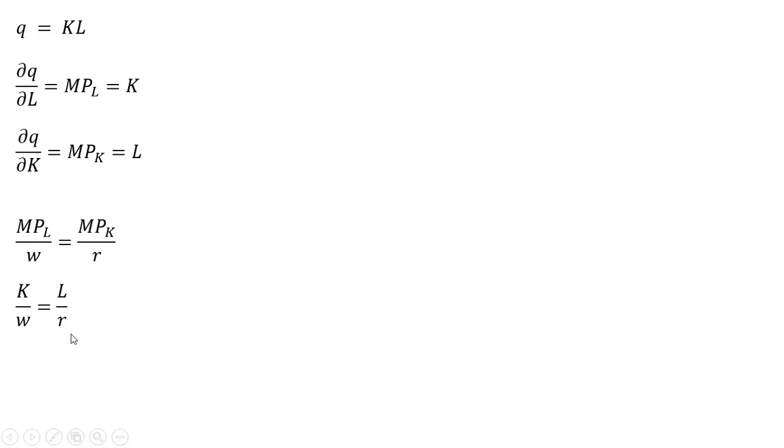And that is divided by the price of capital, R. We're going to solve this for K. So K equals W divided by R times L. Now let's plug that result into the production function.